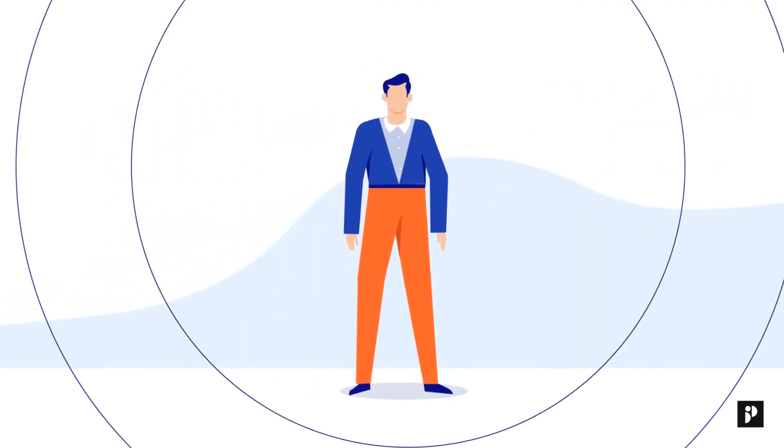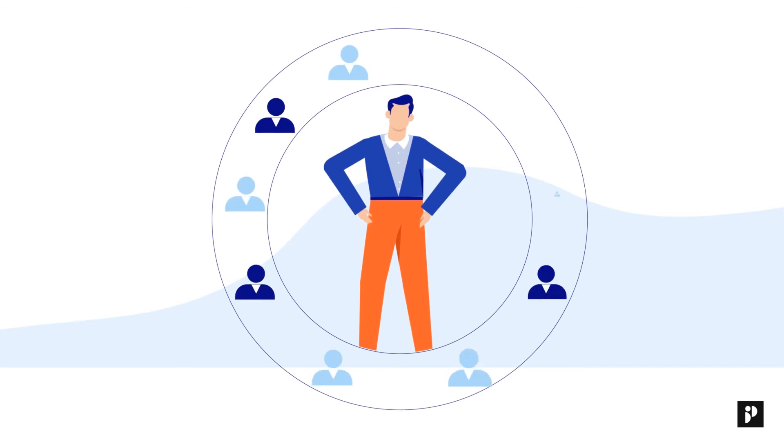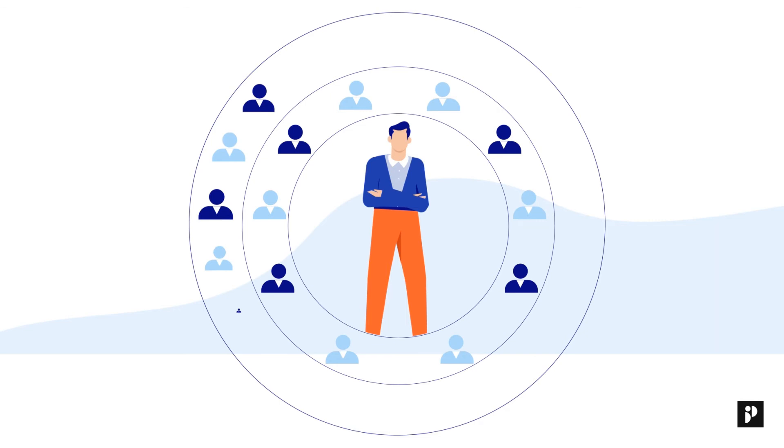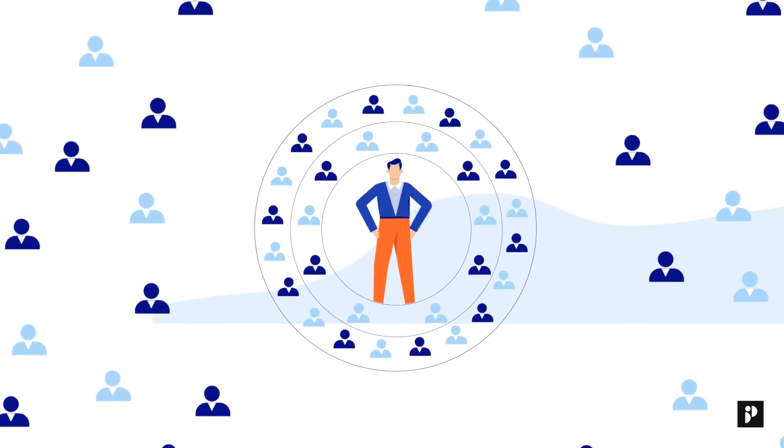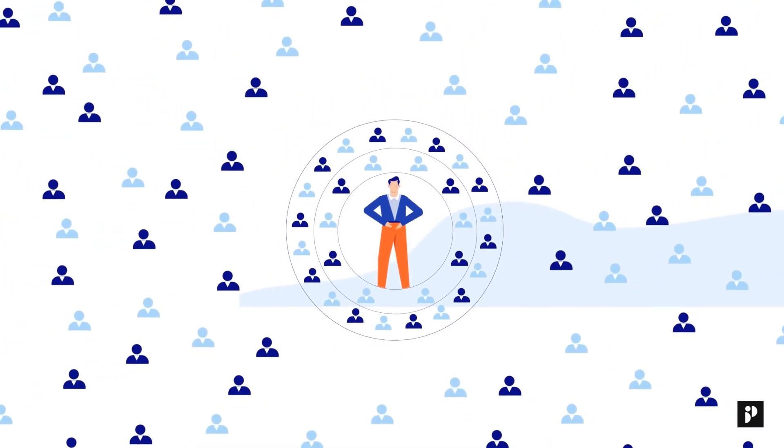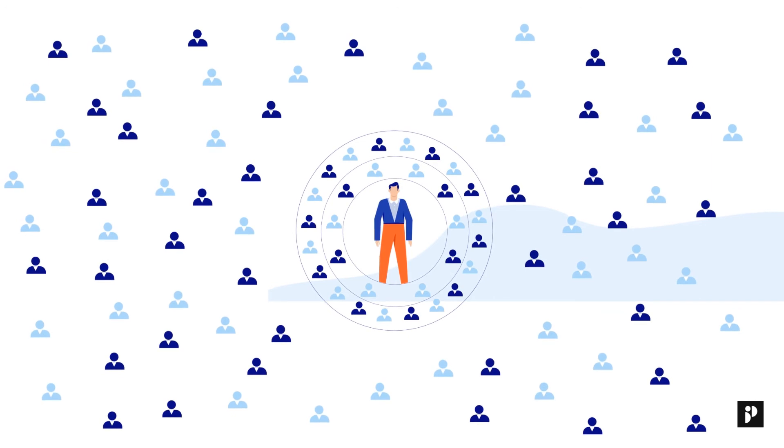For example, if you as an agent know 10 amazing people who in turn can think of two potential candidates each, you will reach 30 people in total. When we do the same estimation, starting with 1500 amazing people, we end up reaching 4500 people within a day.